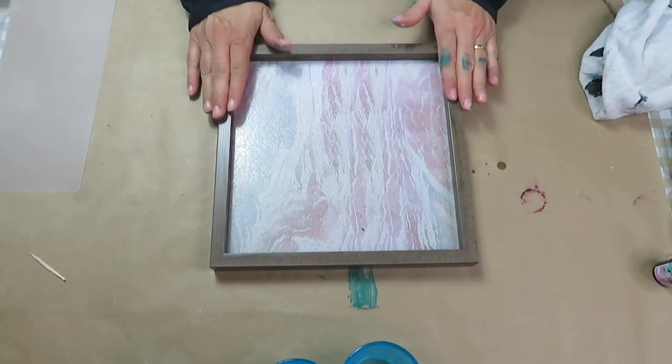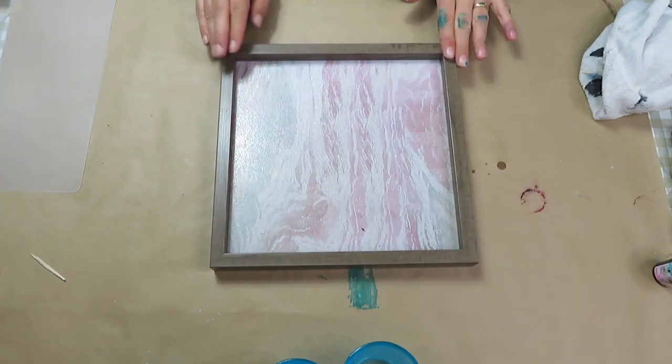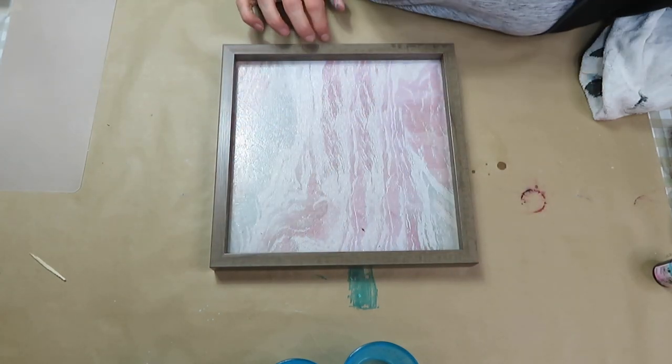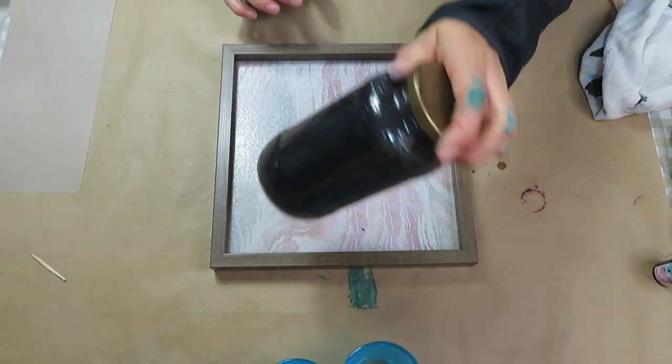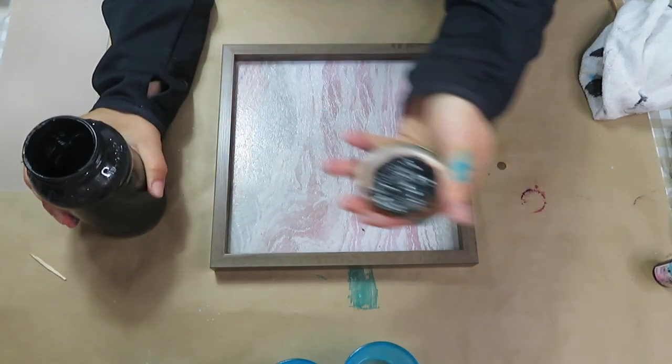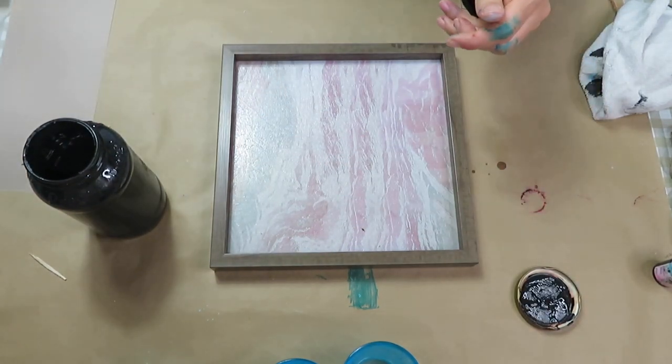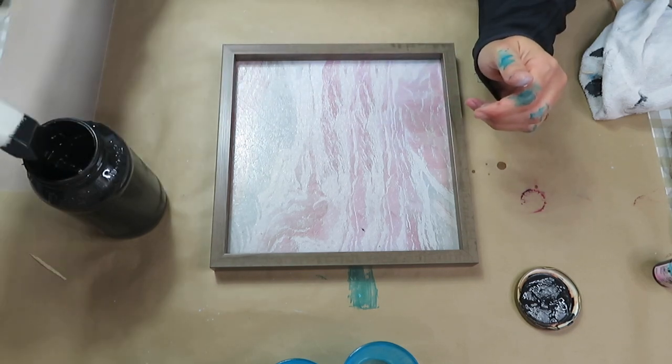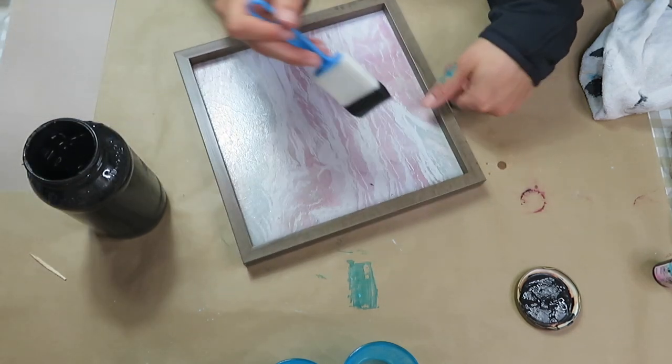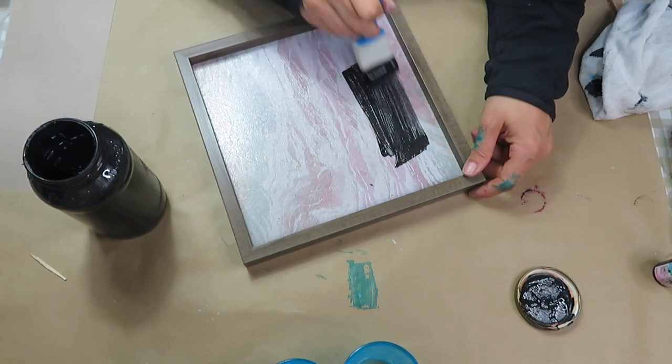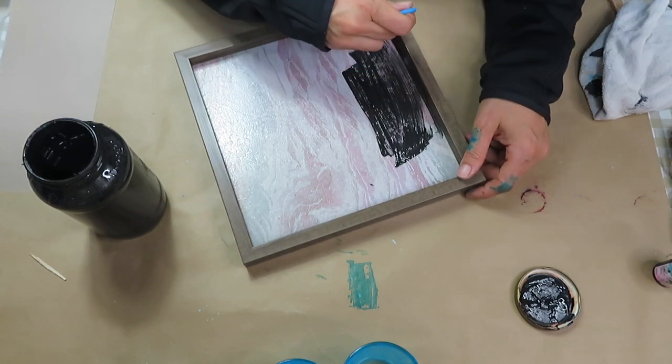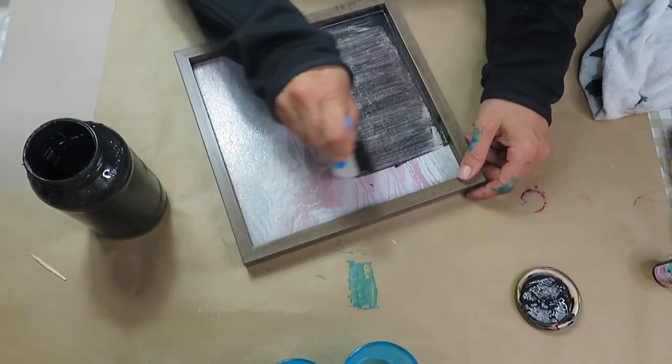For project number two, I'm using a frame that I got at Dollarama. This was a set of two for three dollars, and I'm going to paint the inside of it with some black acrylic paint. I was debating about using chalk paint, but the frame has a lot of texture on the inside and I wanted that texture to show through.